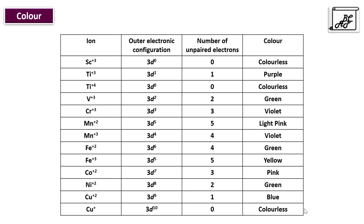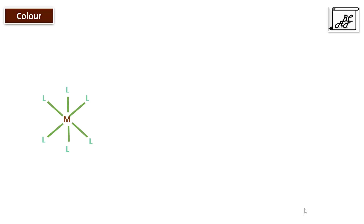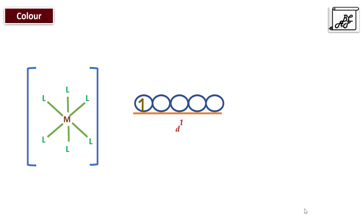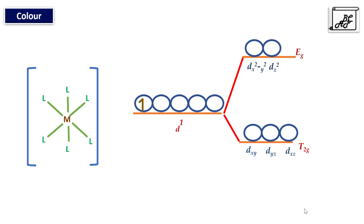For the color of transition elements: elements with zero unpaired electrons in the d orbital are colorless, while elements with unpaired electrons show a particular color. In a complex with d¹ electronic configuration, the five d orbitals split into two levels when the metal interacts with ligands: the lower triply degenerate t2g level and the upper doubly degenerate eg level. The unpaired electron occupies the t2g orbital. When light falls on the substance, the electron absorbs energy and is transferred from the t2g orbital to the eg orbital — this is called a d-d transition.